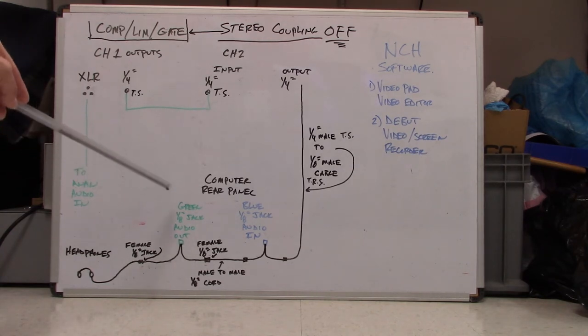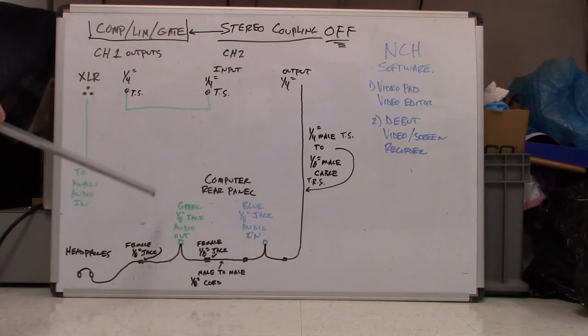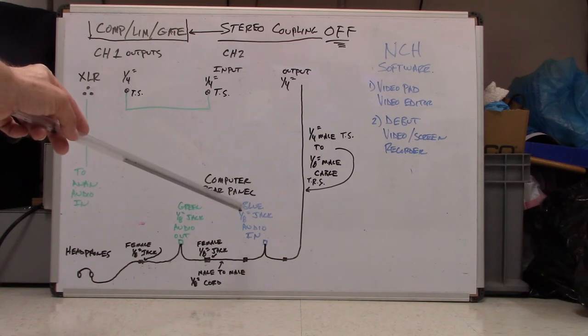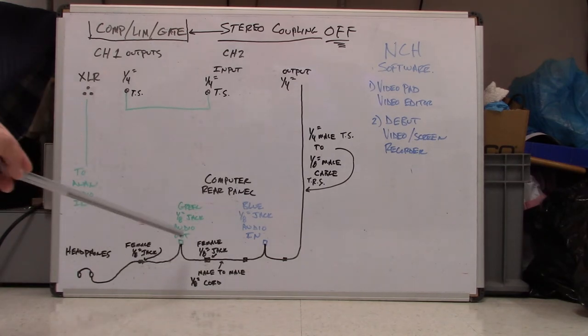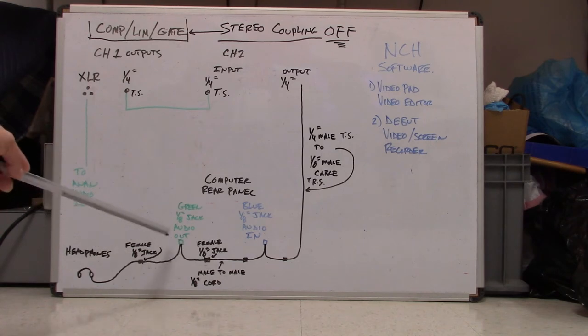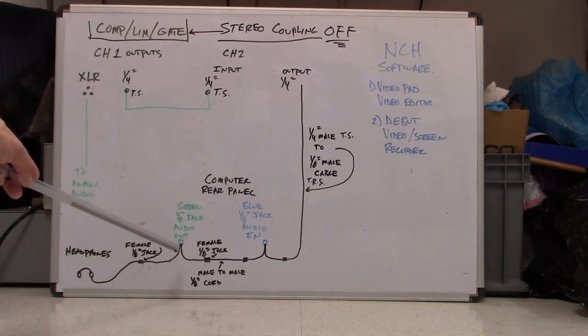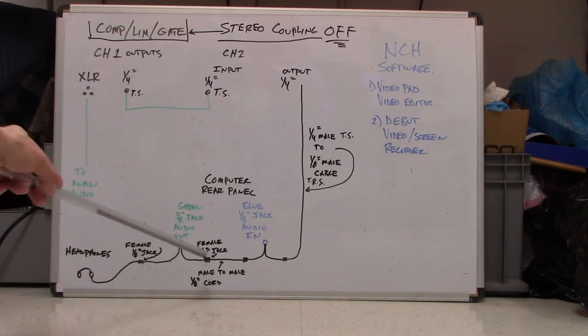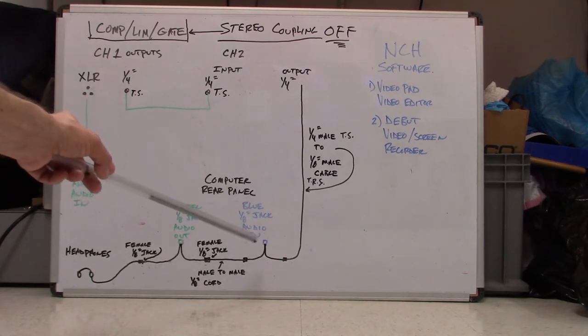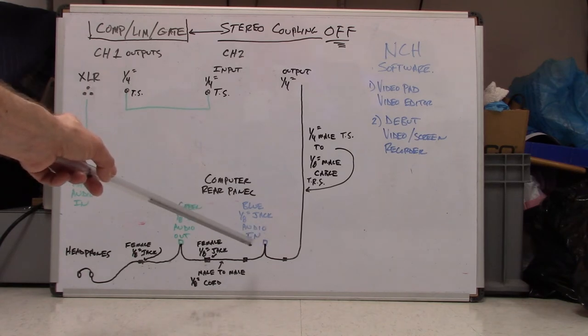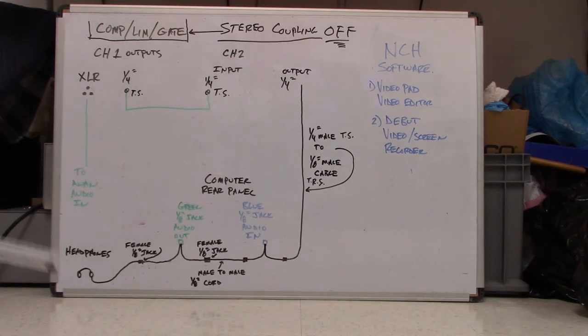So you'll notice on any computer, you're going to have a green jack and a blue color jack. Your green color jack is for your audio out and the blue jack is for computer audio in. Now, the thing I got to pre-explain here are these are Y cables. So it's a male eighth inch stereo jack to plug into the back of the computer. On the other side of Y's out, on each side of the Y, it's a female eighth inch jack. It's set up for stereo or tip ring sleeve on both sides there. Same thing with the audio in. Same Y cable right there.